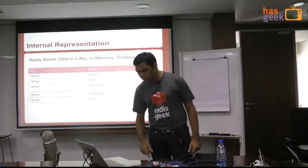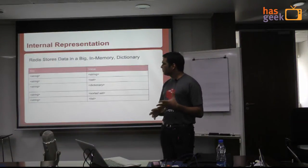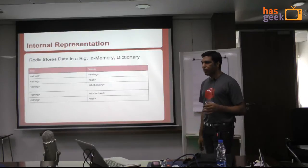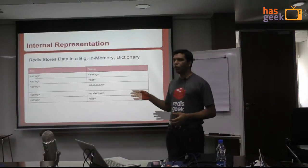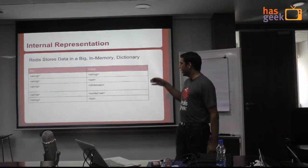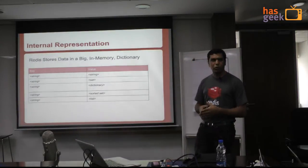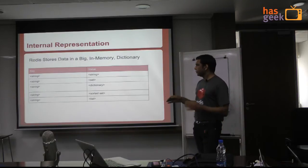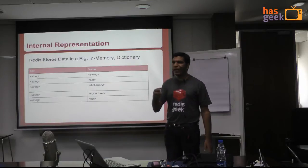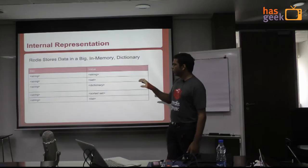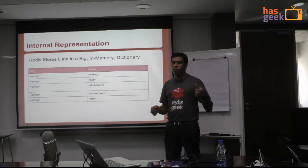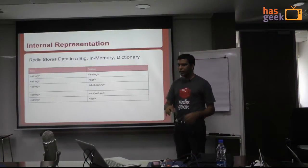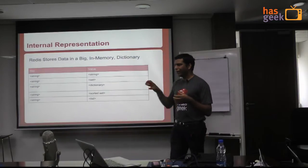Redis is storing everything in a big hash map or dictionary. You've got a top-level namespace where you've got all the keys, and the keys can only be strings. The values can be one of the five data types. Even if you're storing a two-byte key and a two-byte value, because it is stored in a dictionary, that dictionary has its overheads. If you're storing a set, the set would have a key in the dictionary and the set is stored separately as a pointer.